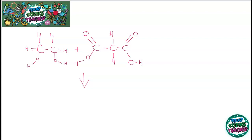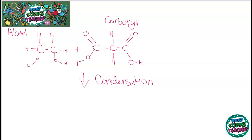There is another type of polymerization other than addition polymerization that can make different polymers known as polyesters, and this type is called condensation polymerization. It's called condensation polymerization because water is made as a side product of the reaction. What happens is you have an alcohol and a carboxylic acid, and you'll notice they have functional groups on both sides.